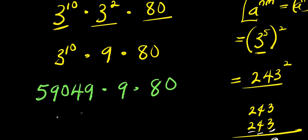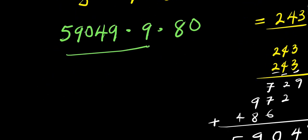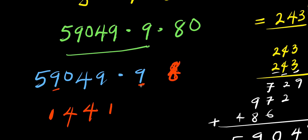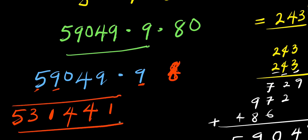So we have 59,049 times 9 times 80. We first multiply 59,049 times 9: 9 times 9 is 81, carry 8; 9 times 4 is 36, plus 8 is 44, carry 4; 9 times 0 is 0, plus 4 is 4; 9 times 9 is 81, carry 8; 9 times 5 is 45, plus 8 is 53. The product of 59,049 times 9 is 531,441.